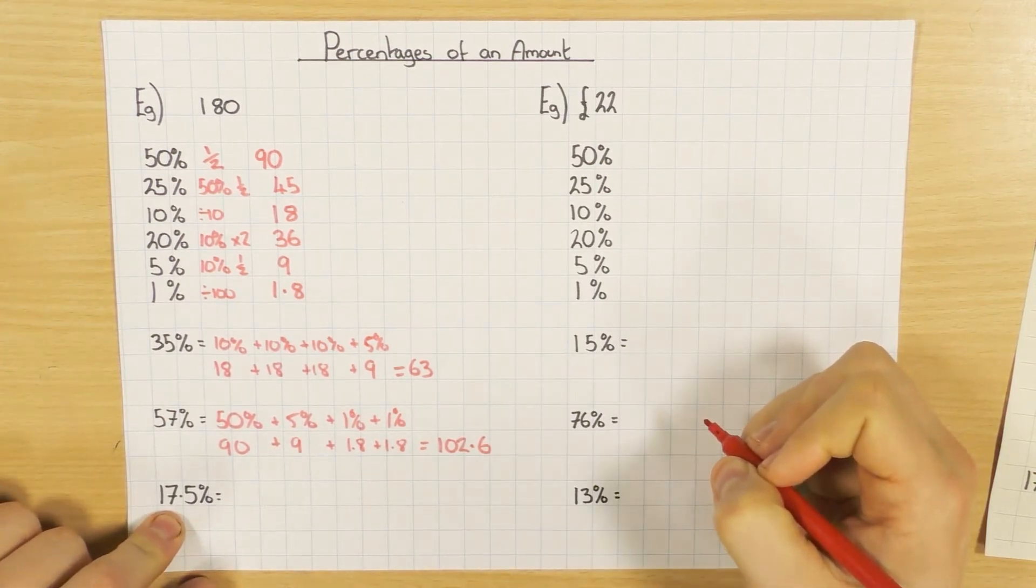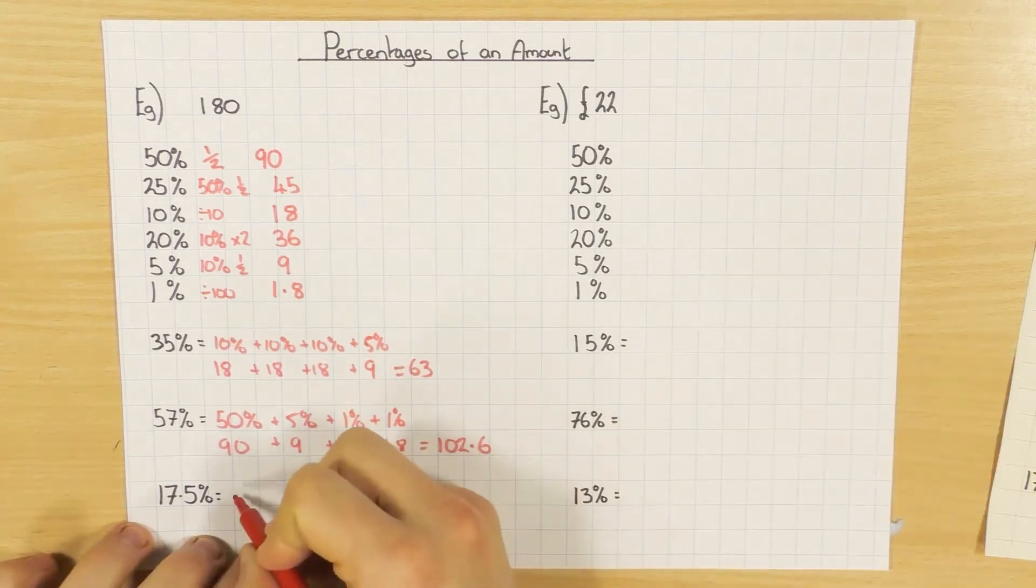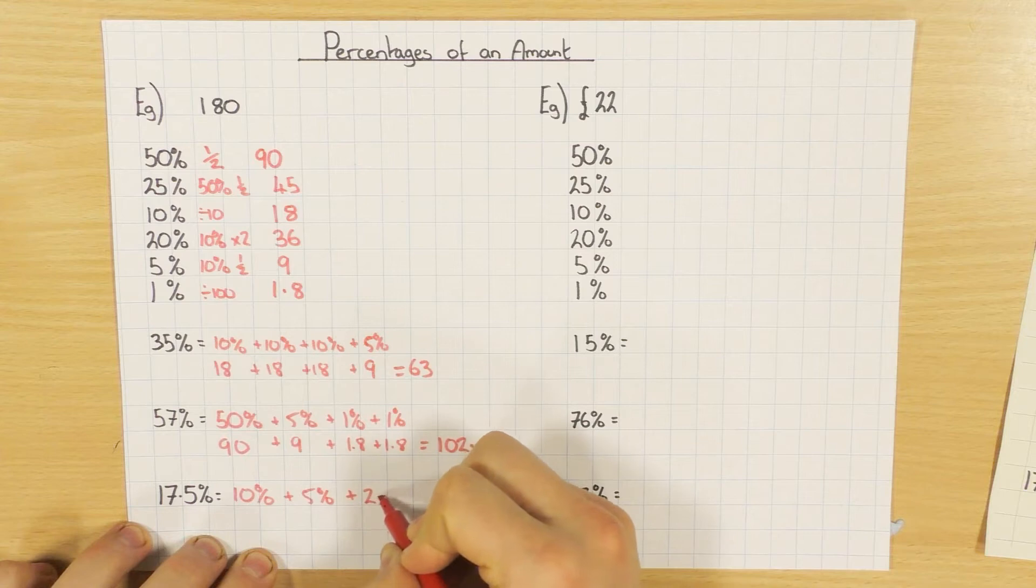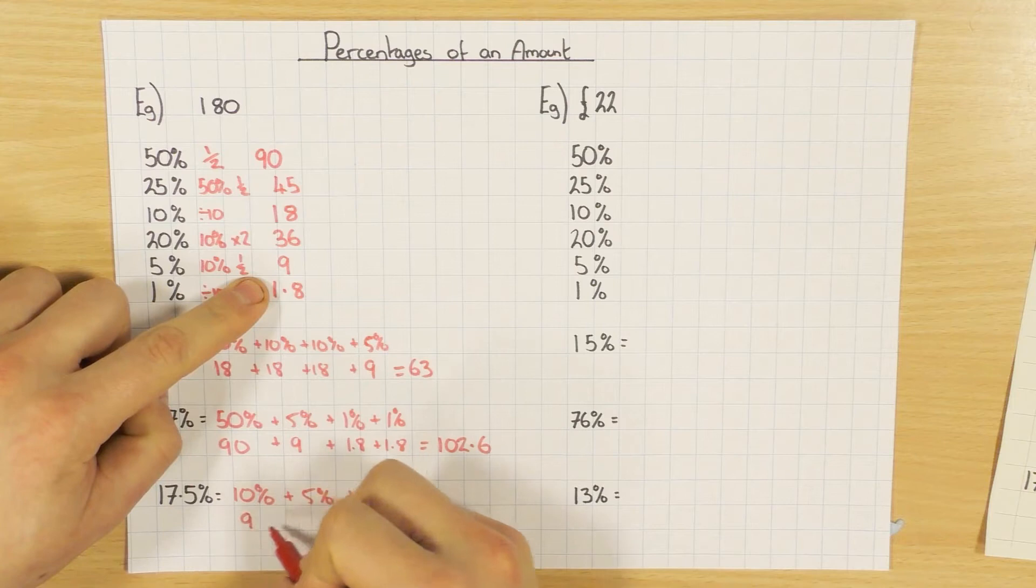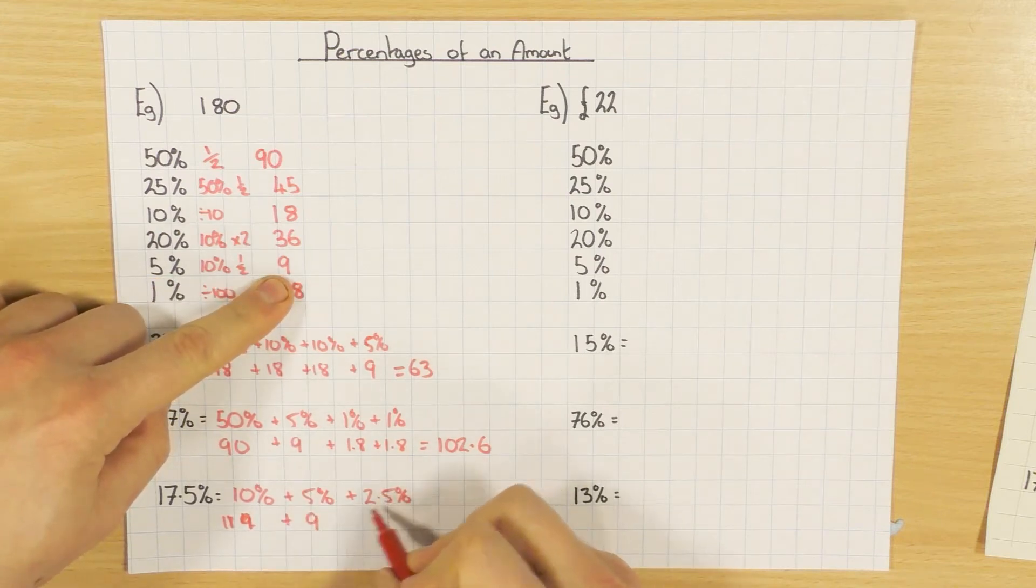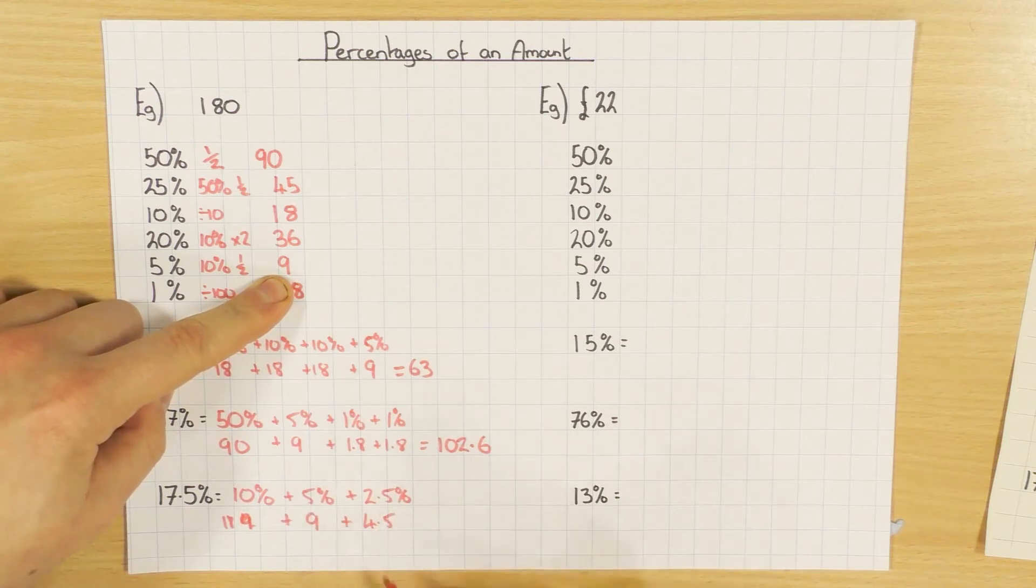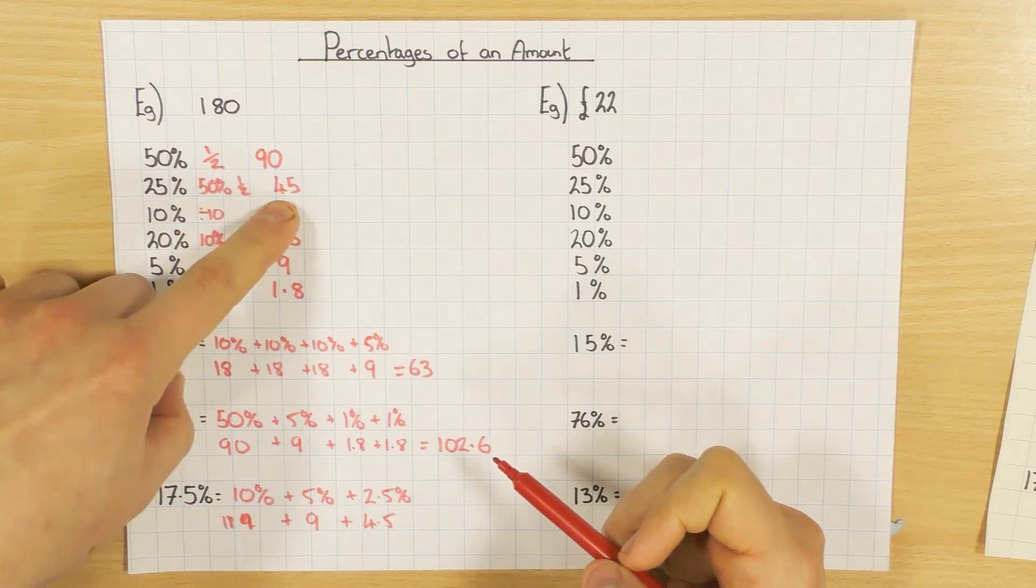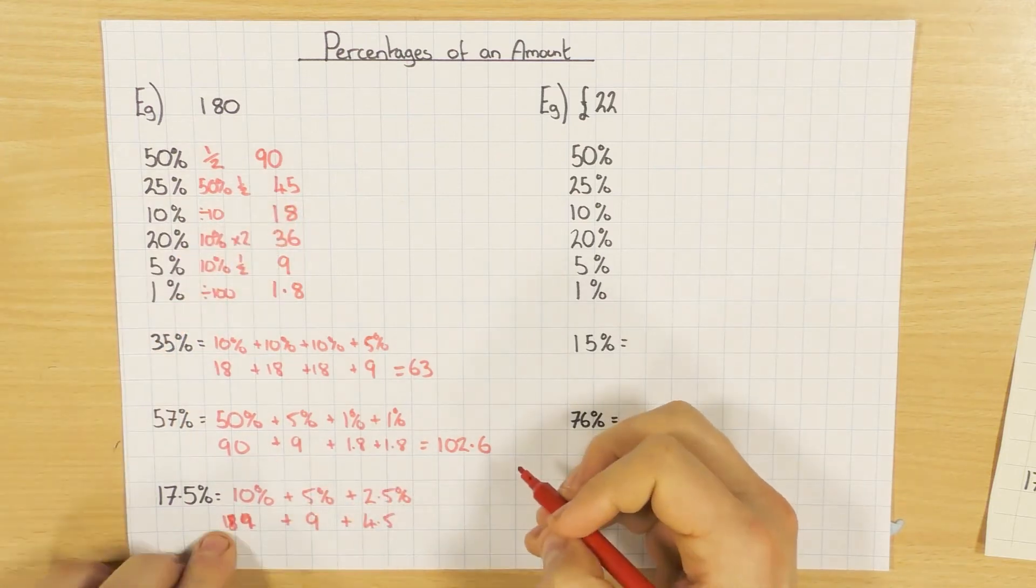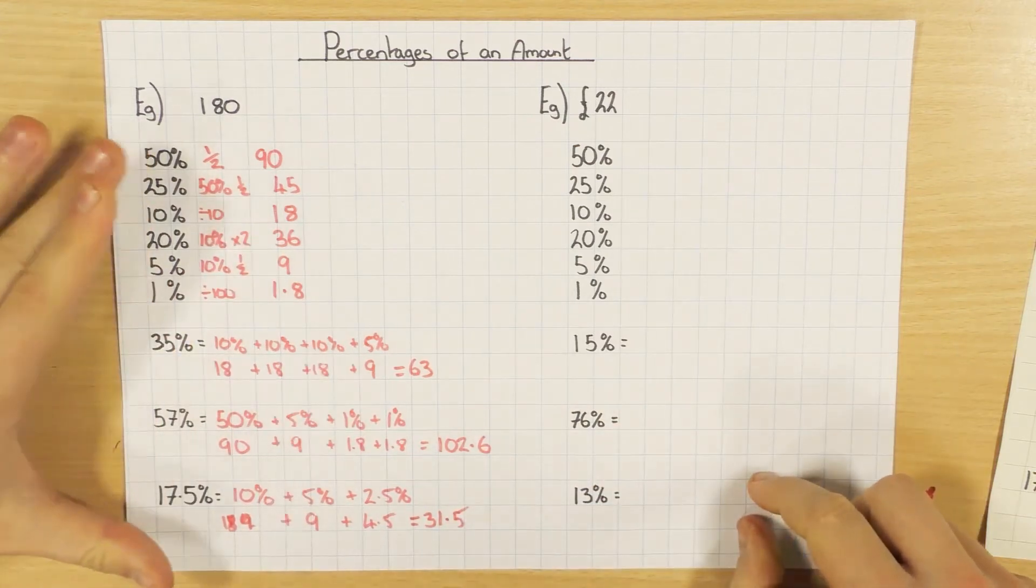And the last one here, it used to be very common because obviously this used to be VAT. Not so common now, but you still might be asked it, so this is how you do it. How I would do this one is I'd use 10%, add 5%, and then add 2.5%. So 10% is 18, 5% is 9, and 2.5% is actually half of 5. So all I do is half the 9, and therefore add 4.5. So if you want 2.5%, find 5% and then just half it. So 18 plus 9 plus 4.5, and then you should have 31.5. So that's the non-calculator way of doing it.